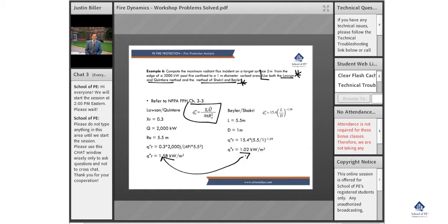Our heat release rate is a function of chi_r times the heat release rate over 4π, and this r is squared. So what is this? This is that efficiency factor, combustion efficiency.